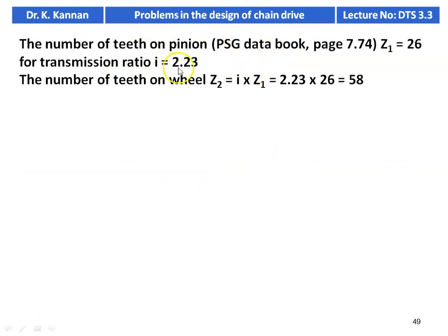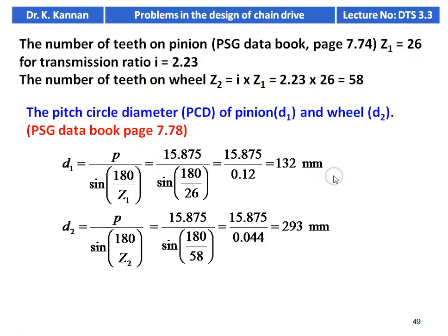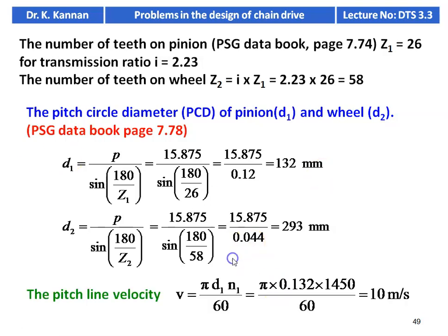For speed ratio I = 2.23, Z1 = 26 teeth on pinion. Z2 = I × Z1 = 2.23 × 26 = 58 teeth on wheel. PCD of pinion: D1 = 15.875 / sin(180/26) = 15.875 / 0.12 = 132 mm. PCD of wheel: D2 = 15.875 / sin(180/58) = 15.875 / 0.044 = 293 mm. Pitch line velocity: V = π D1 N1 / 60 = π × 0.132 × 1450 / 60 = 10 m/s.